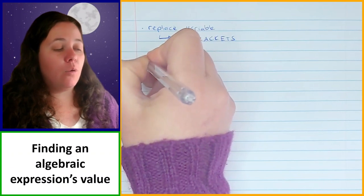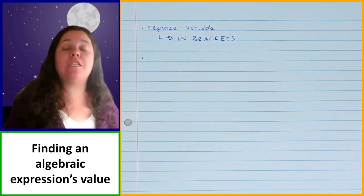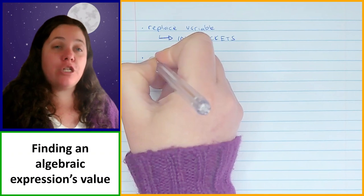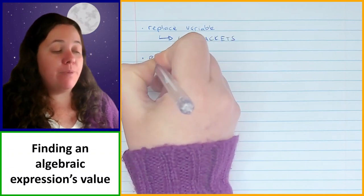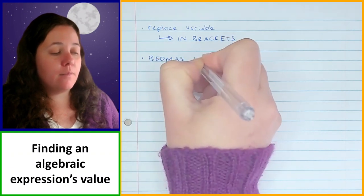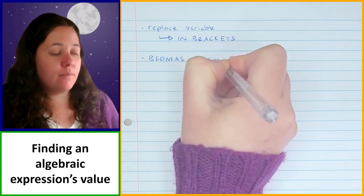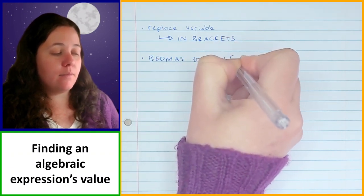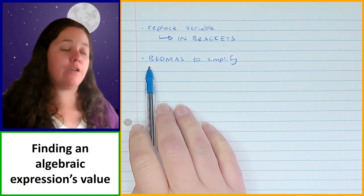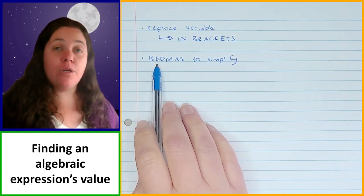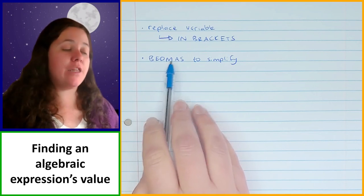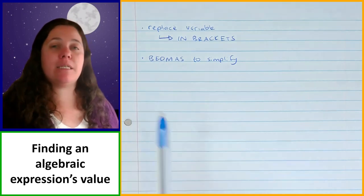Once you've put in your values, you need to simplify using the order of operations — BEDMAS. Remember: brackets first, anything inside brackets needs to be worked out first. Then exponents next. Then division and multiplication go together, and addition and subtraction go together.